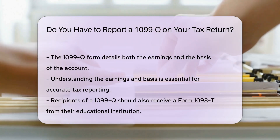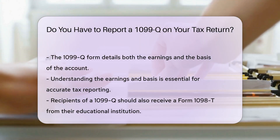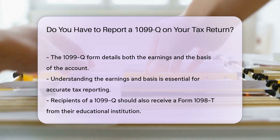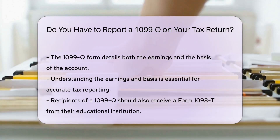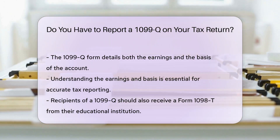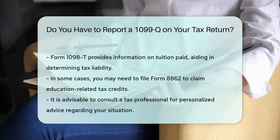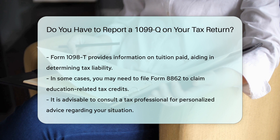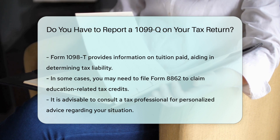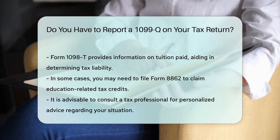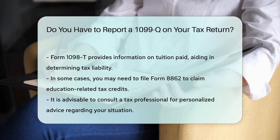If you received a 1099-Q, you should also receive a Form 1098-T from the educational institution. This form provides information about the tuition paid and can help determine your tax liability. In some cases, you may need to file Form 8862 to claim a tax credit related to education expenses.